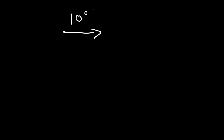In this video we're going to talk about how to find percents mentally. So let's start with something simple. What is 10% of 200? To find 10% of 200, all you need to do is move the decimal one unit to the left. 10% of 200 is 20.